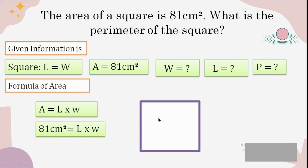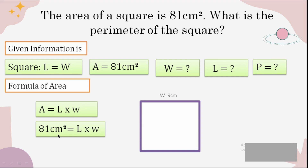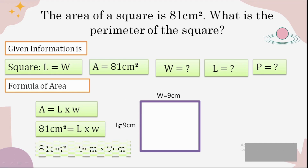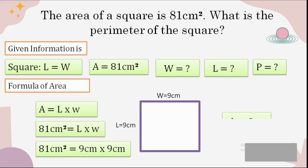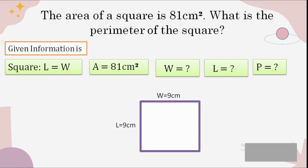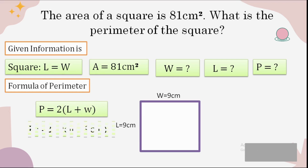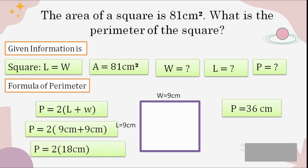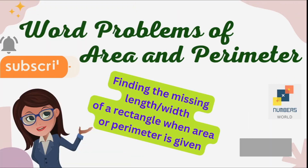Since it's a square, the same number is used for both length and width. Think of a number that, when multiplied by itself, gives 81. That number is 9. So width = 9 cm and length = 9 cm; multiplying gives 81 cm², satisfying both conditions. Now find the perimeter: write the formula, put in the values, and the answer is 36 centimeters.